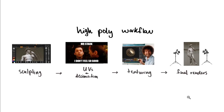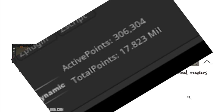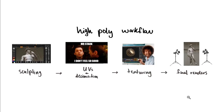The other workflow I want to talk about is the high poly workflow. This is what I used to create this model, Authorian. And it's very similar to the low poly or game-ready workflow, except there's no retopo section. So initially you start off the same way — sculpting.